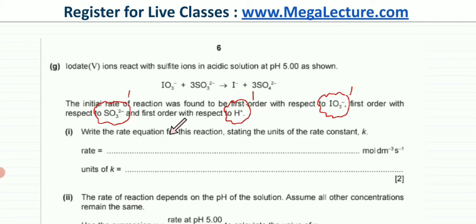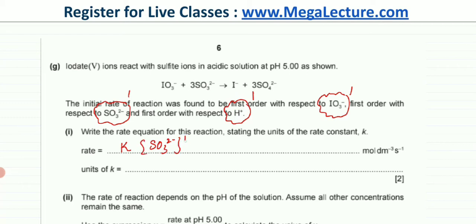We're asked to write the rate equation for this reaction and state the units of the rate constant k. The rate equation is: rate = k[SO3²⁻]¹[H⁺]¹[IO3⁻]¹, where the order with respect to each species is 1.